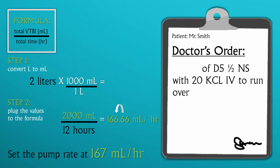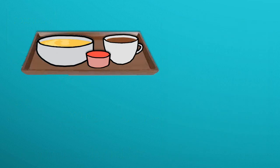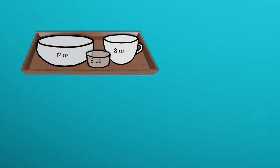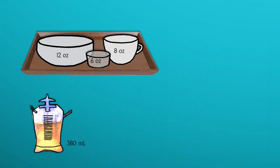You gave him a clear liquid tray for dinner and he consumed tea, which is eight ounces, broth, which is 12 ounces, and jello, which is six ounces. You also emptied out his Foley bag and measured 380 milliliters of urine output and noticed about 150 milliliters of output from the nasal gastric tube canister.